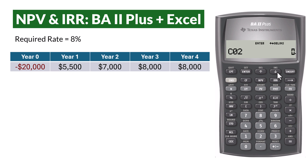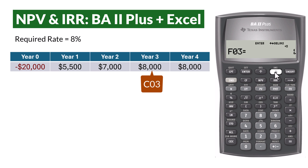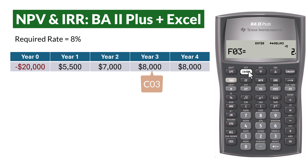For C02, input $7,000. Enter and scroll down. F02 should also be left at 1. Scroll down. For C03, input $8,000. Enter and scroll down. Since we have $8,000 twice in a row, we can set the frequency to 2 instead of entering it twice. Enter, and we're done entering the values.